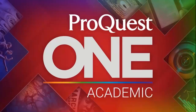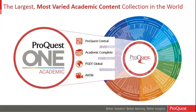In January of this year we launched a new collection called ProQuest One Academic. If you aren't familiar with it, it is the world's largest collection of academic content, comprised of four multidisciplinary databases: ProQuest Central, Academic Complete, ProQuest Dissertations and Theses Global, and AVON. Students and faculty are very keen to work across a variety of resources depending on their stage of research. A video can be a great introduction for students new to a topic; a book chapter provides comprehensive coverage; journal articles from ProQuest Central show the limits of scholarly research.